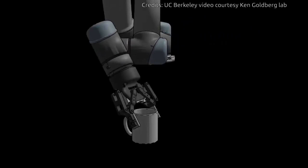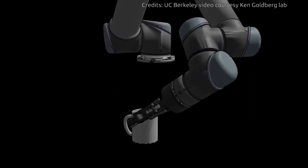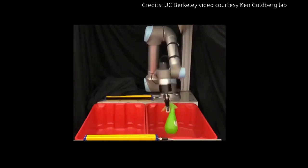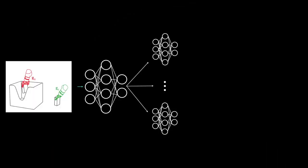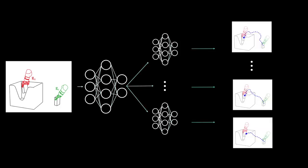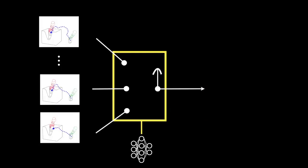In the new study, the UC Berkeley researchers dramatically sped up the computing time of the motion planner by integrating a deep-learning neural network. Neural networks allow a robot to learn from examples.